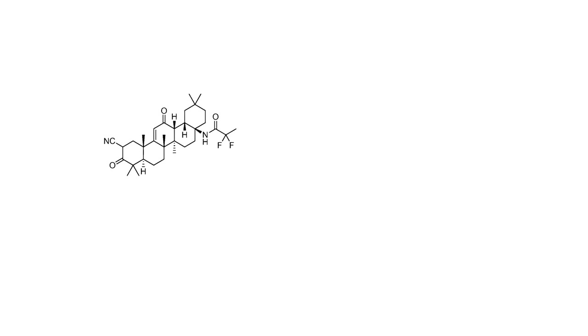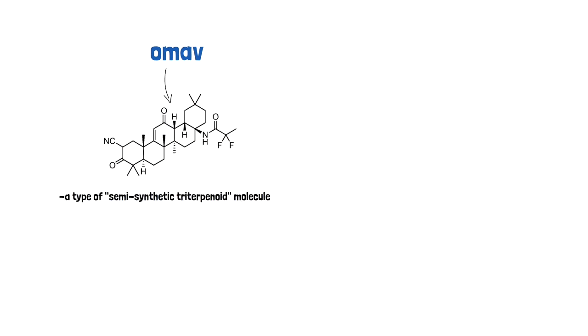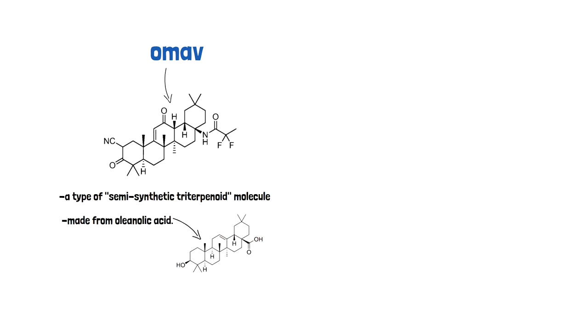OMAV is one of several chemical compounds called semi-synthetic triterpenoids, which are made from the naturally occurring plant compound oleanolic acid.